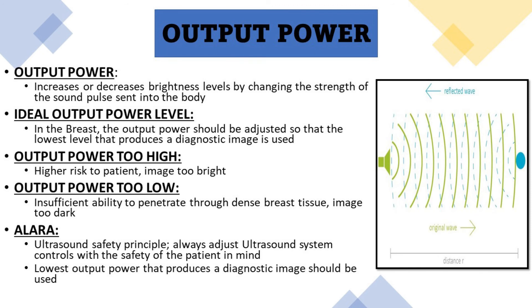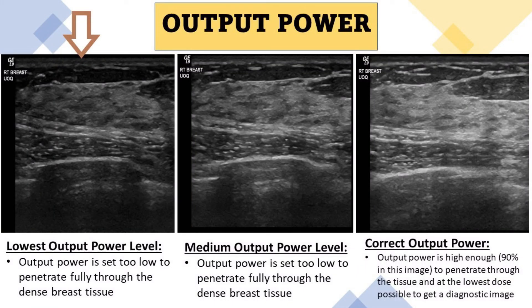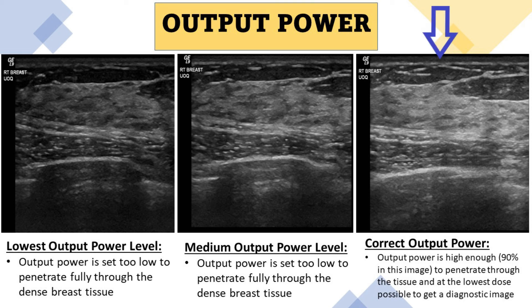It's important when operating an ultrasound machine to abide by the ultrasound safety principle of ALARA — as low as reasonably achievable. Always adjust the ultrasound system controls with the safety of the patient in mind; the lowest output power that produces a diagnostic image should always be used. In the first image, the output power is set too low and doesn't fully penetrate through the dense breast tissue. In the next image, the output power is turned up to a medium level but is still too low to penetrate fully. In the last image, the correct output power has been achieved, set at 90%, penetrating fully through the tissue.